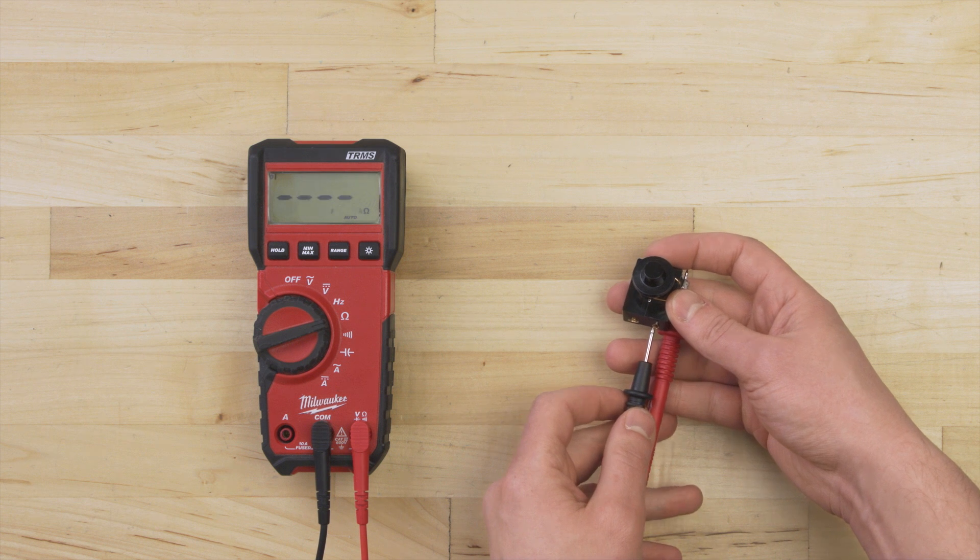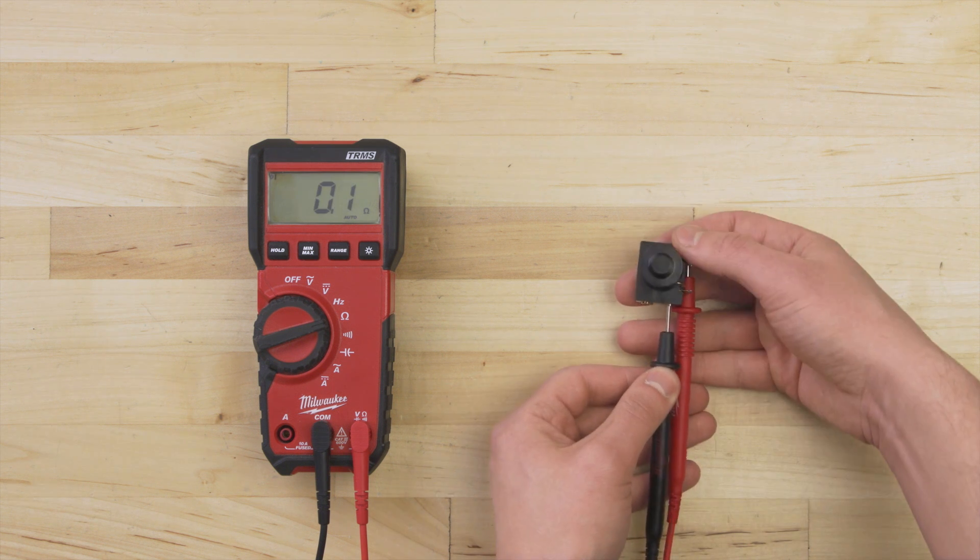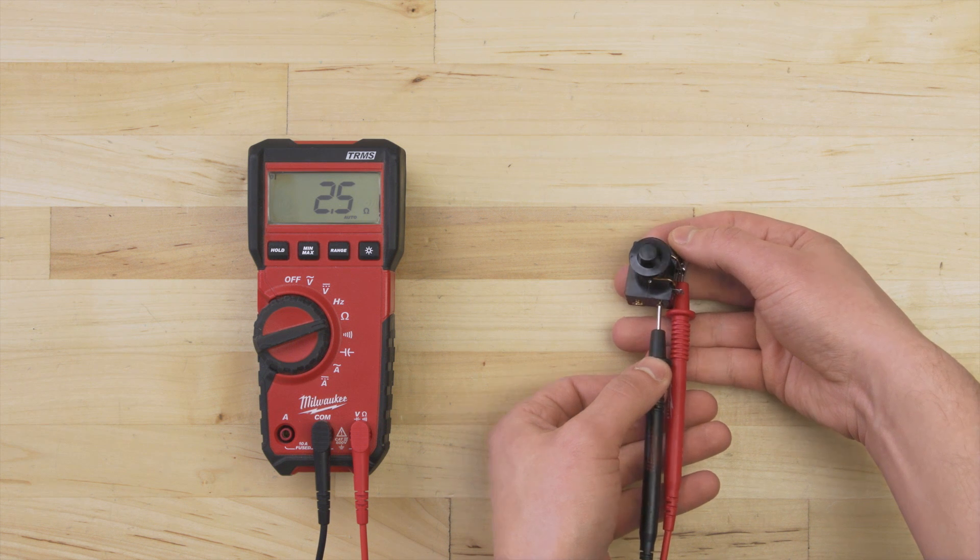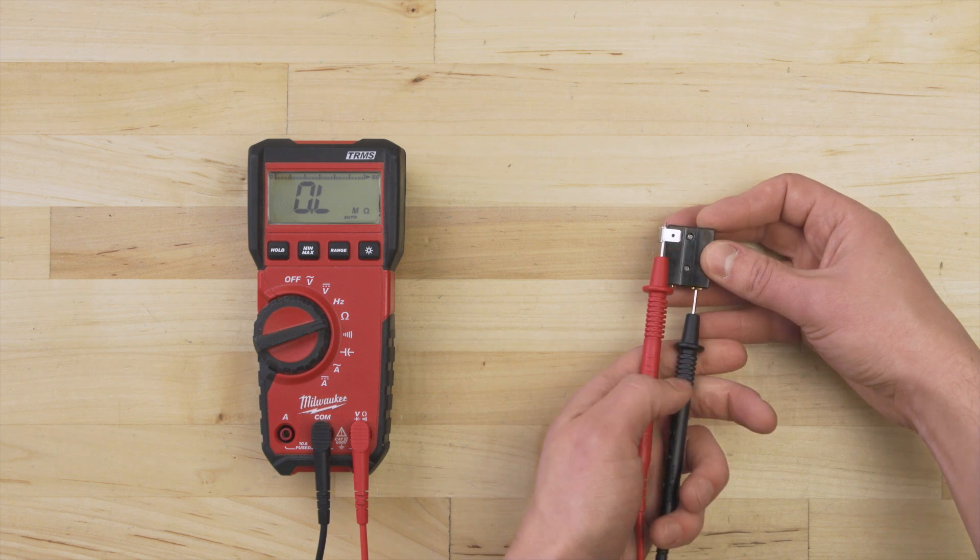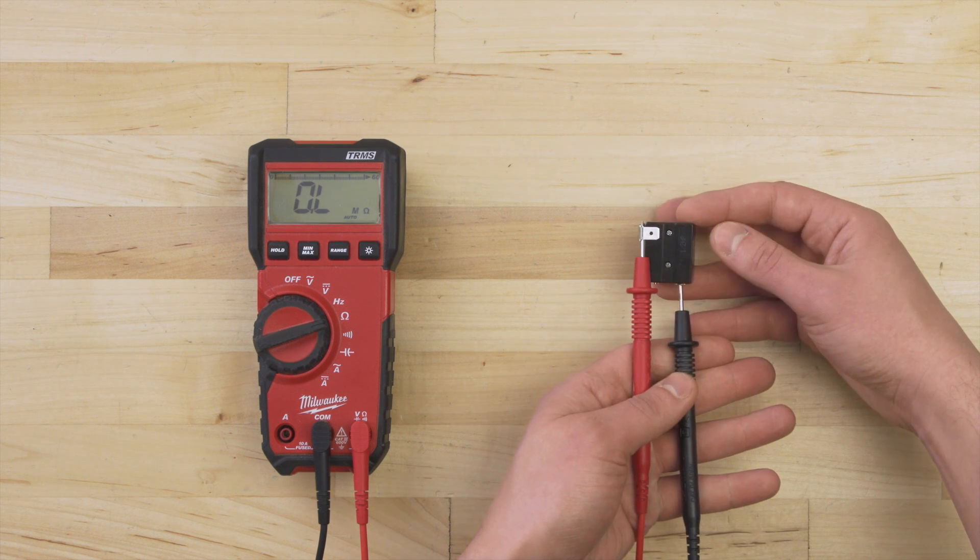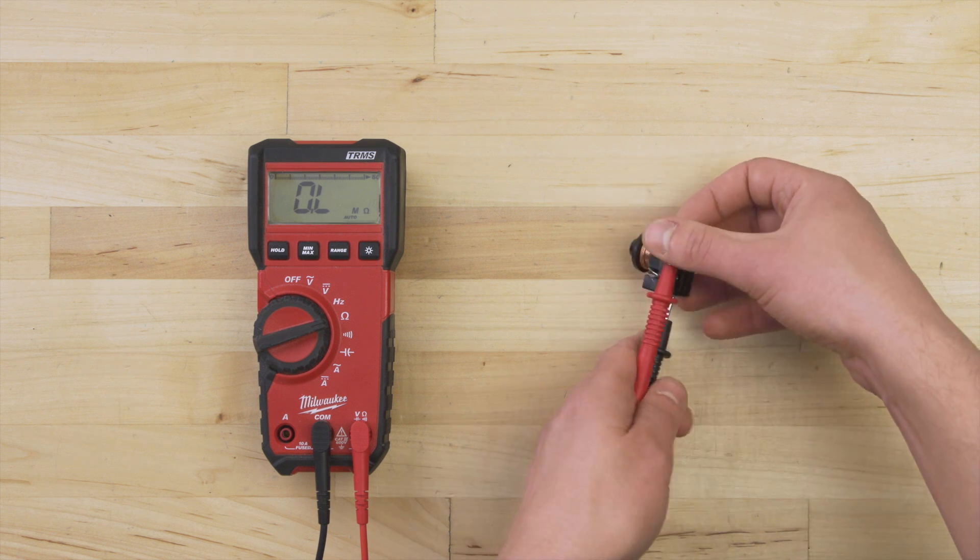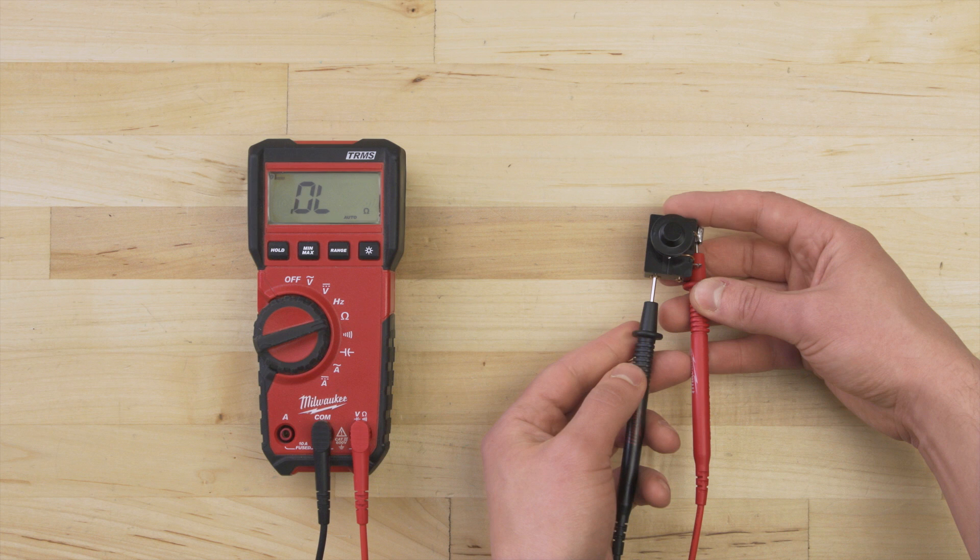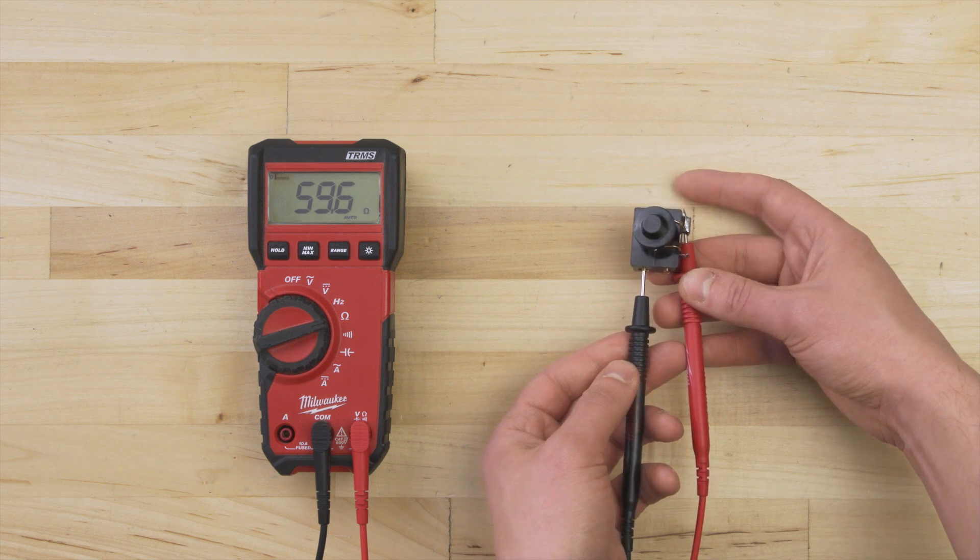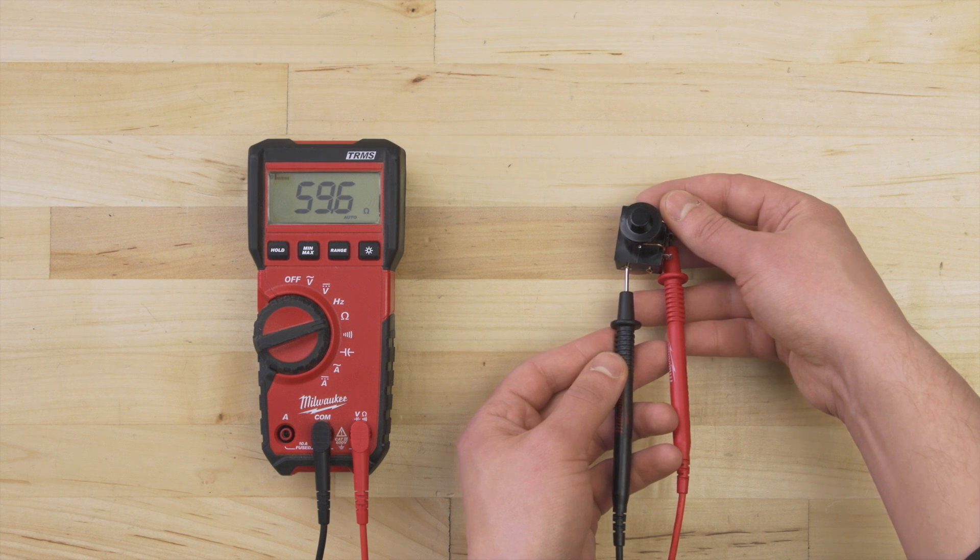For this relay, you'll need to do two continuity tests. First, test between the M terminal and the free terminal. There should be continuity. Now, test between the S and the free terminal. When the relay is facing down, there should be no continuity. When you flip it over, the contacts will close and there should be continuity. If it fails either test, then replace the relay.